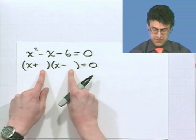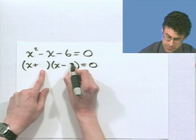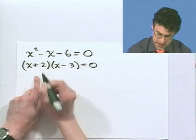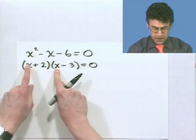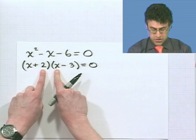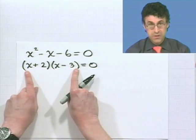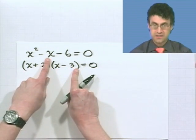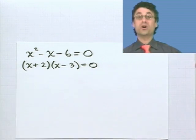Well, 2 and 3 work, right? Because 2 times 3 is 6. If I put the bigger number 3 here and 2 here, then notice I get x squared. Good. Here I see 2x minus 3x is negative x. Good. And then 2 times negative 3 is negative 6. This works.